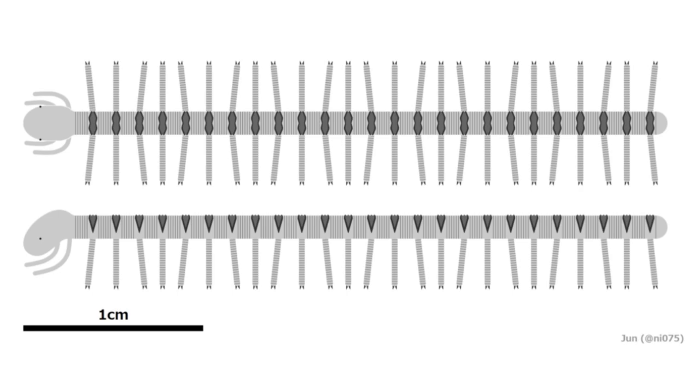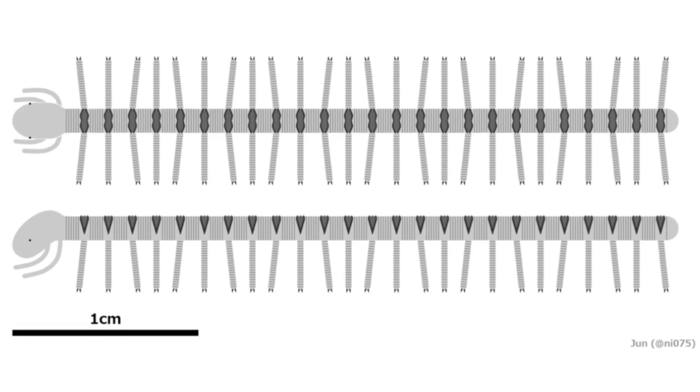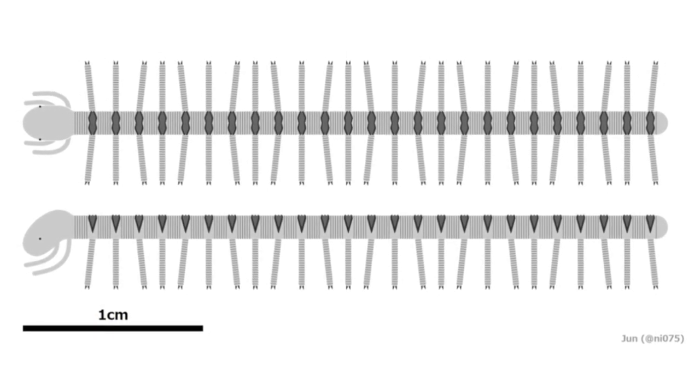As surprising as it was to find the ancient brain, the researchers were more taken aback by the shape and structure of the critter's cranium. The head and brain are both non-segmented, meaning that they are not split up into multiple parts.